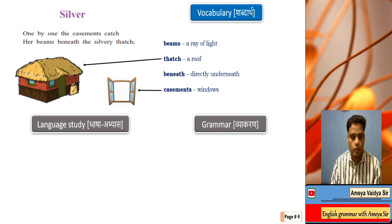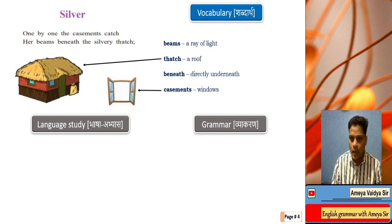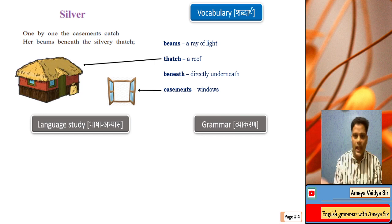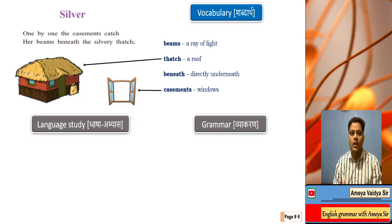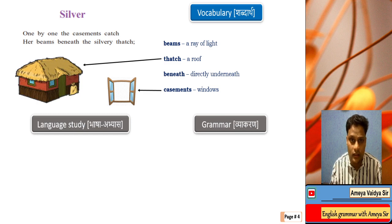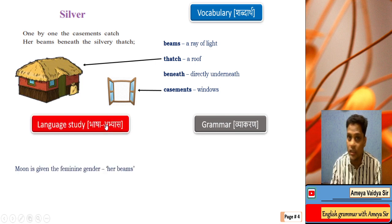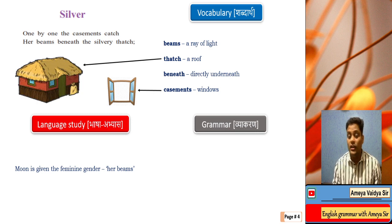The meaning of 'casements' is windows. 'One by one the casements sketch / Her beams beneath the silvery thatch.' Beams are rays of light; 'beneath' means directly underneath; 'thatch' is a type of roof. Everything has turned silver because of the moonlight — it's likely nearing a full moon night. The moon is again given the feminine gender: 'her beams.' Unlike in India where the moon is referred to as 'Chanda Mama,' here it is 'Chanda Mommy' according to Walter de la Mare.